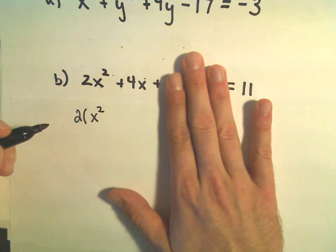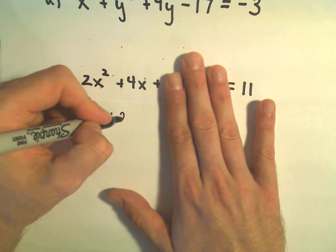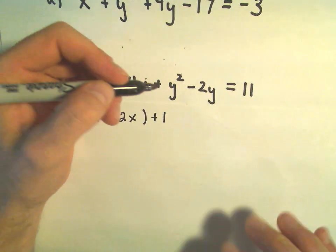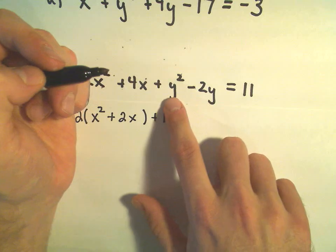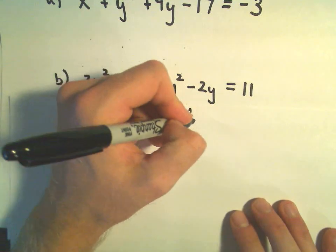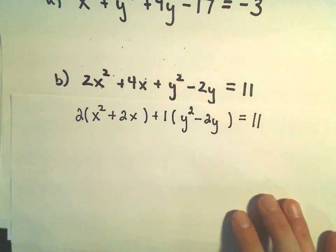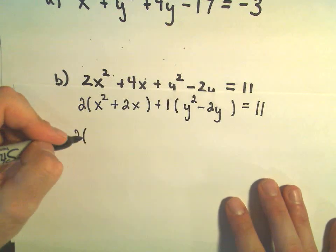So inside the parentheses, I would need an x squared plus 2x. You can imagine factoring out a 1, I mean, the coefficient on the y squared is already a 1. So I'm just going to put my y squared minus 2y in parentheses.